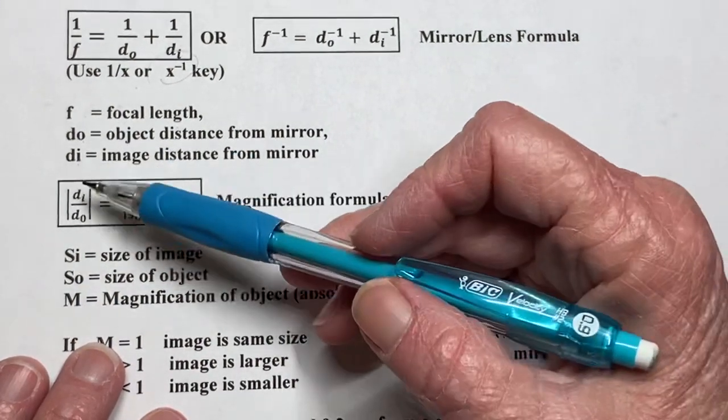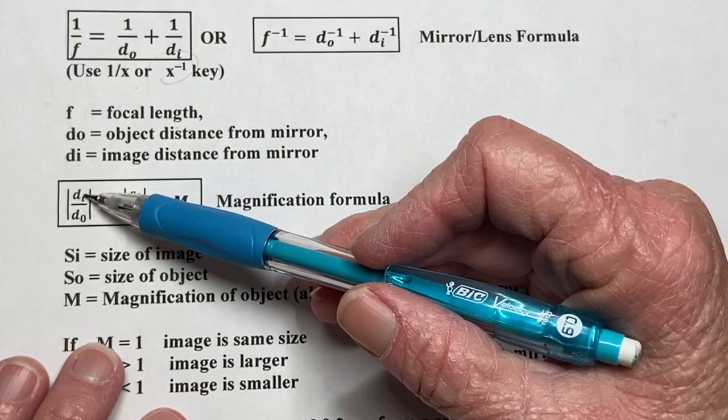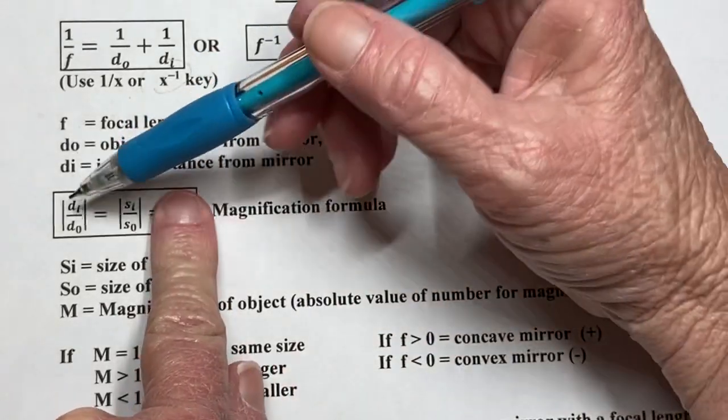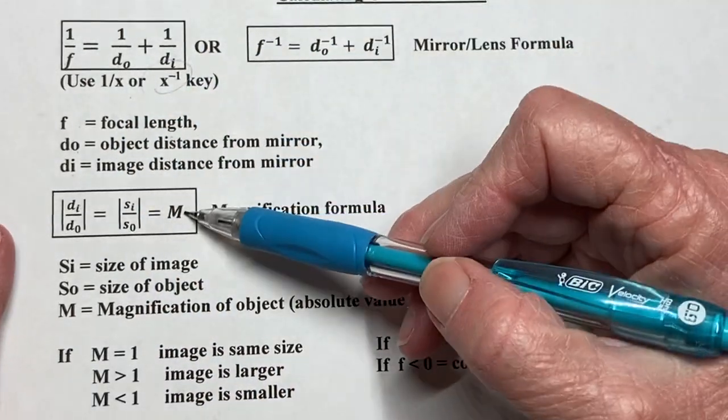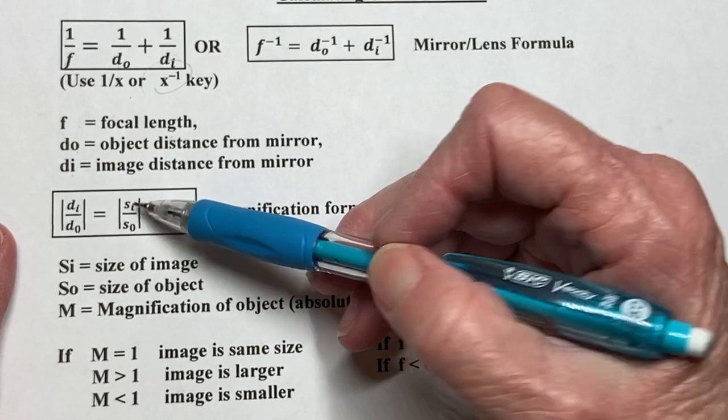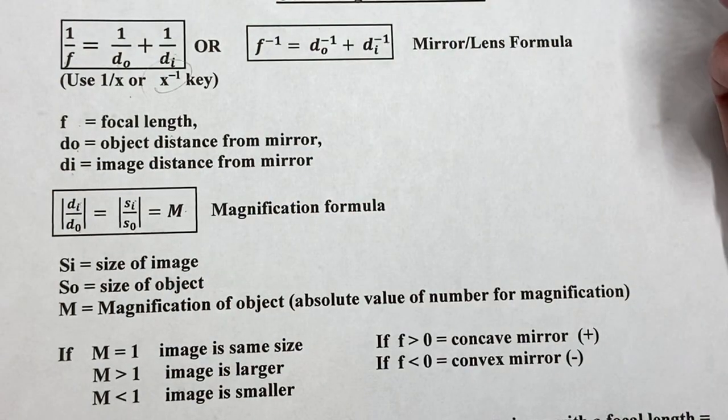And then the relationship between the sizes. So if I want to find the size of an image, I can use this cross multiply. I can use the magnification formula and just use a cross multiply of the sizes and the distances. But if I want to find the magnification, I literally just take the size of an image over the object, or the distance of the image. Those are going to be proportional.